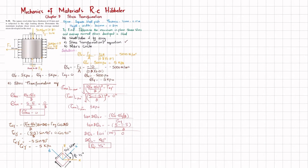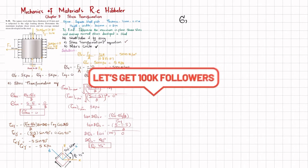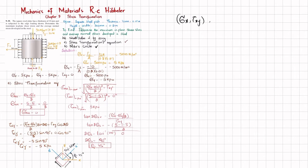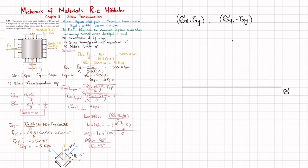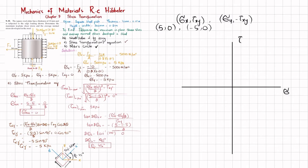Now we solve the same problem using Mohr's circle. We need the coordinates (σx, τxy) = (5, 0) and (σy, −τxy) = (−5, 0). We take the horizontal axis as normal stress and the vertical axis as shear stress. Let each division equal 1 kPa, so we plot point (5, 0) and point (−5, 0).